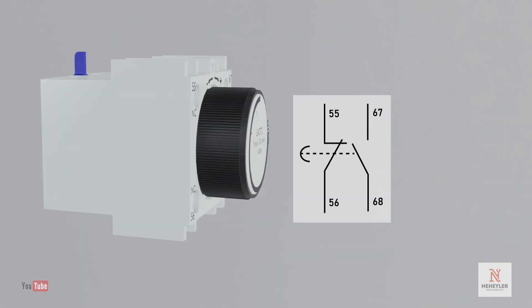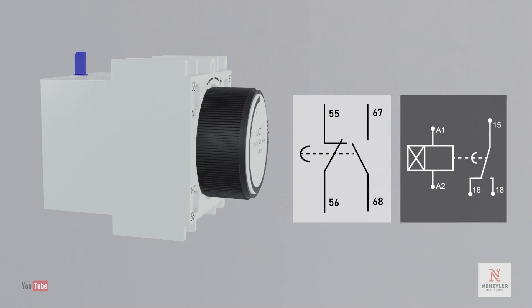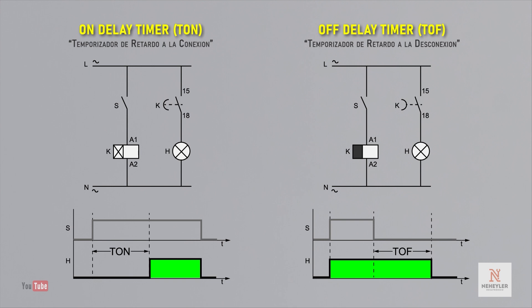The symbology for the on-delay timer is this, although the contactor coil is missing here since, in other types of timers, its symbol can be found in this other way. In a circuit, we can find these symbols somewhat differently since the normally open auxiliary contact is mostly used.